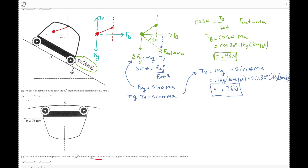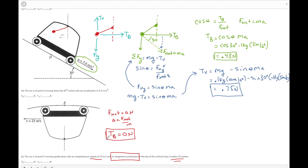At point E, the cart is upside down with an instantaneous tangential speed of 25 meters per second, no tangential acceleration, and radius R equals 25. No tangential acceleration means F_net equals zero in the horizontal direction, so there are no horizontal tension forces. Therefore TB equals zero newtons — nothing besides tension could produce a left-right force, and there's none.